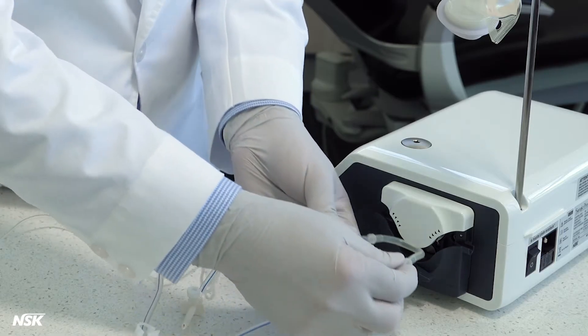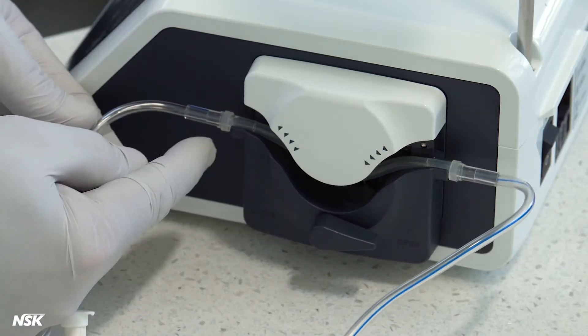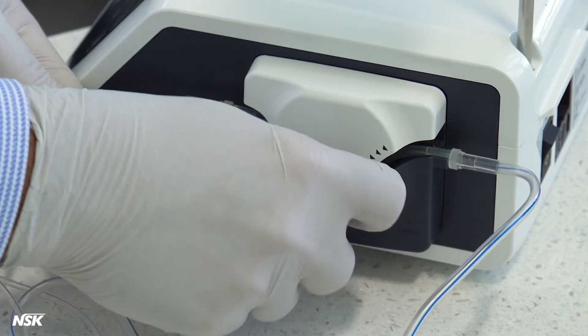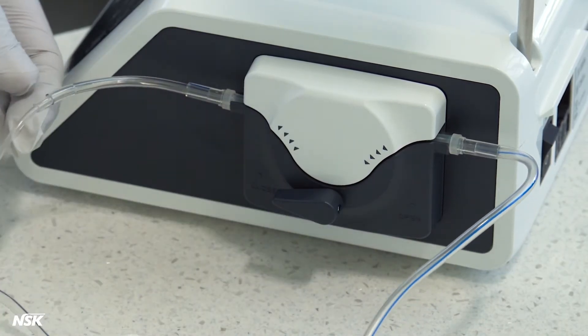Then, bend the tubing and insert inside the spindle. Make sure the two stoppers on the tubing stay outside the pump. Then, turn the lever back to close.